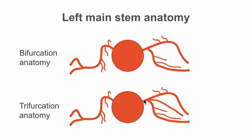the left main stem separates into the left anterior descending artery along with a left circumflex artery, but in addition there is a further branch which is called either the ramus branch or the intermediate branch. This third branch normally follows a path in between the left anterior descending artery and also the left circumflex artery.